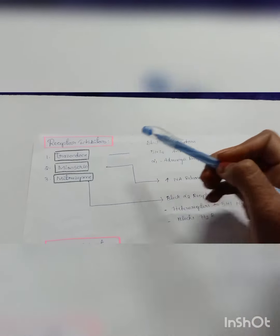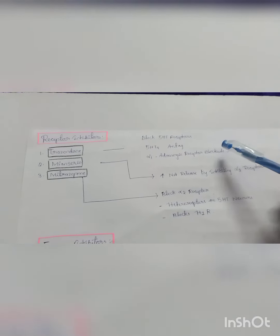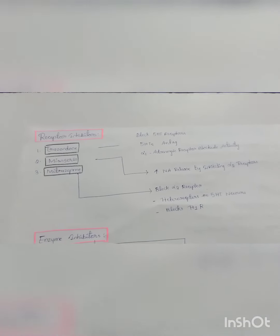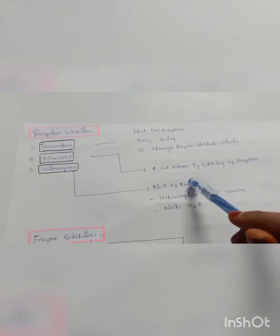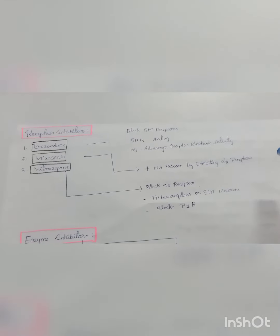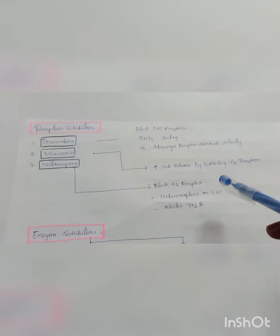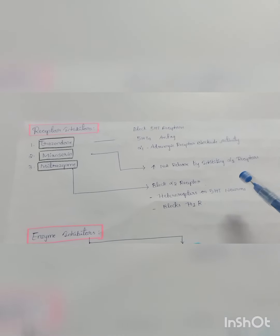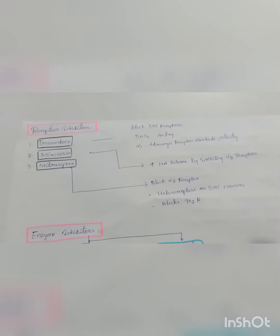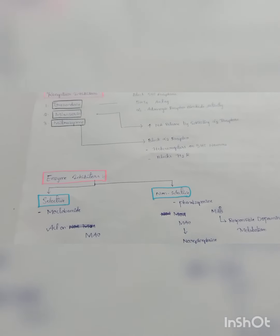Trazodone's mechanism of action: it blocks serotonin receptors and has adrenergic receptor blockade activity. The second drug, mianserin: its activity is to increase noradrenaline release by inhibiting alpha-2 receptors. The third drug, mirtazapine: it blocks alpha-2 receptors and H1 receptors on the serotonin neurons.